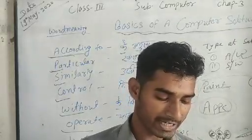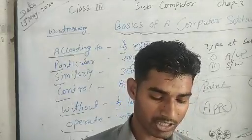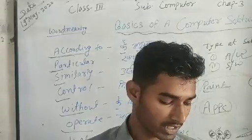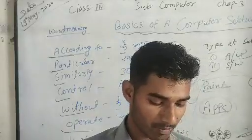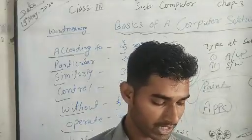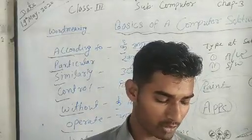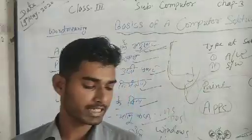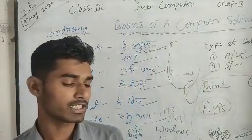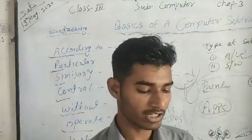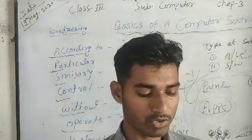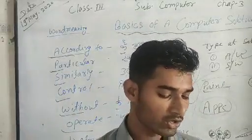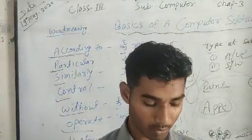Question 3: In order to calculate things, you will use the dash program. Options: (A) Wordpad, (B) Paint, (C) Calculator, (D) Notepad. If you want to do a calculation, you will use the Calculator program.